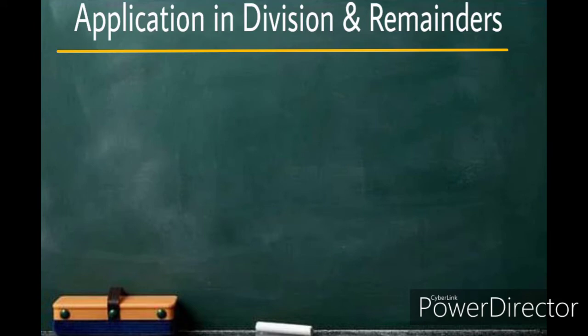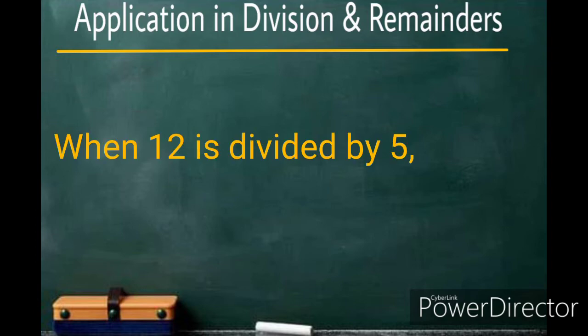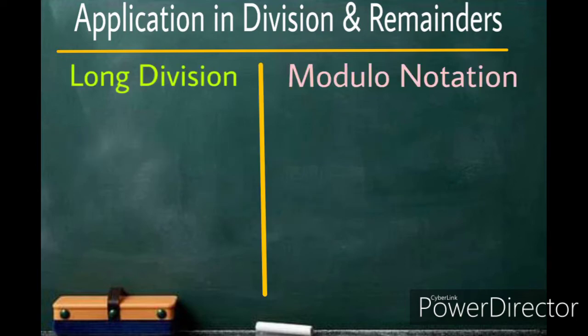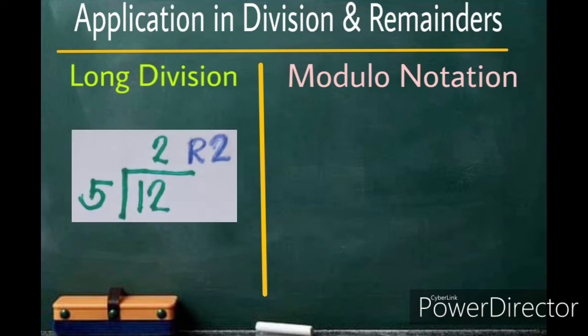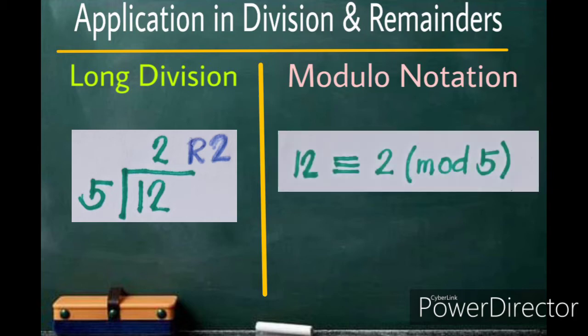When doing long division, we have learned to use remainders. For this example, when we divide 12 by 5, we see a remainder of 2. Now let's take a look at how we can write this in two different ways. The first way is to try the long division method. 12 divided by 5 is equal to 2 remainder 2. And it can also be written in the form of a Modular Notation that is 12 is congruent to 2 mod 5.